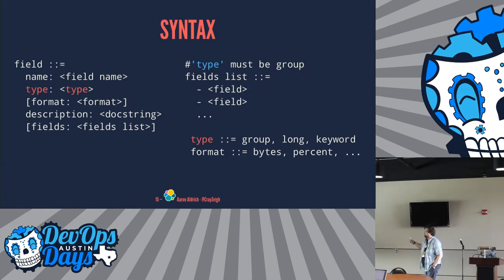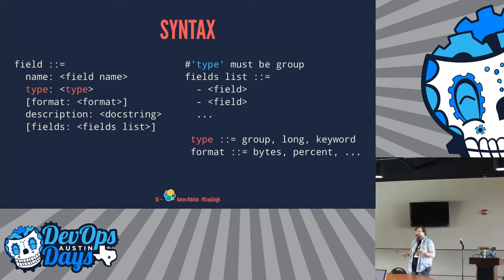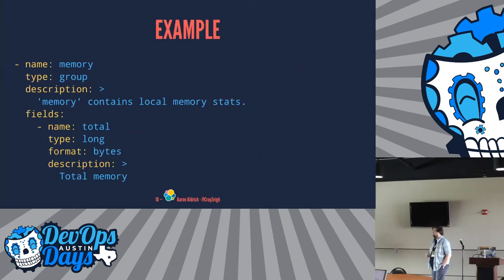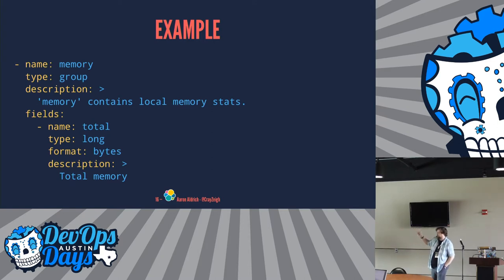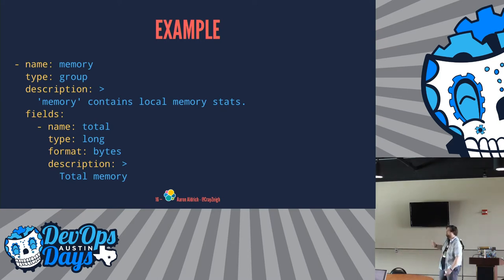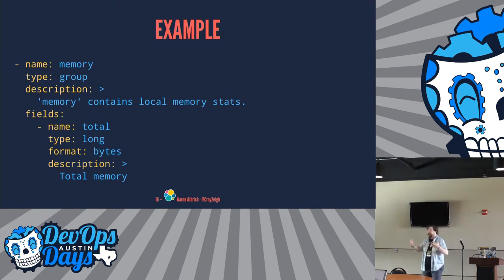The fields.yaml has syntax for keeping track of either a group of different data points or a number or keyword, and what format that's in for Kibana. For instance, for MetricBeat, we're tracking memory — that's going to be a group of different numbers. We've got a description that contains local memory stats, so it's already documenting what it is. We know it's a group, and we've got a list of fields. In this case, total memory is a long, it's going to be bytes, so we know in Kibana we want to roll up as bytes. This can go on for as many data points as we have, documenting what you're actually tracking, how it should be tracked, and what format you're expecting.